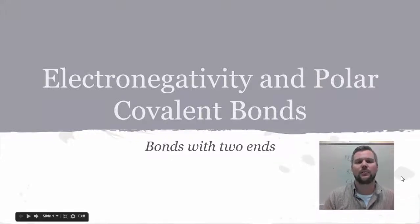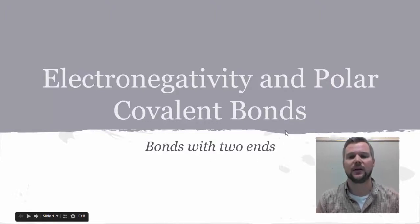All right, welcome back. We're going to talk about electronegativity and polar covalent bonds today. A bond that's polar has two ends, a positive end and a negative end.